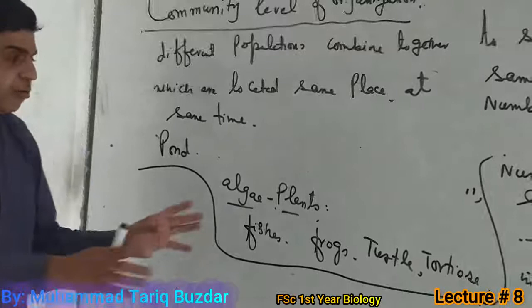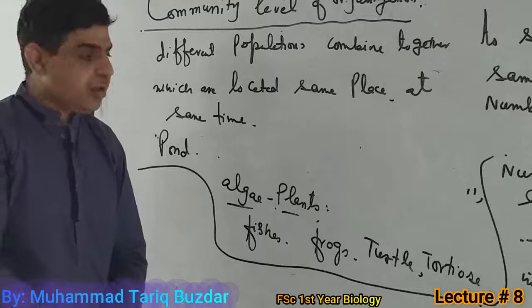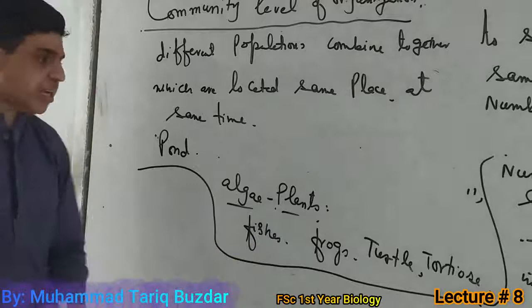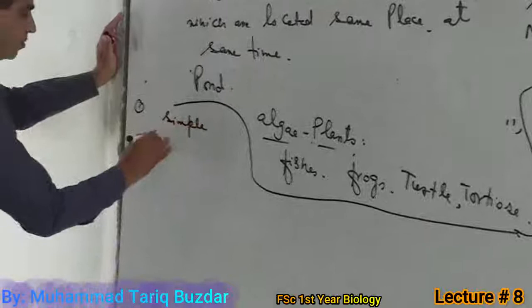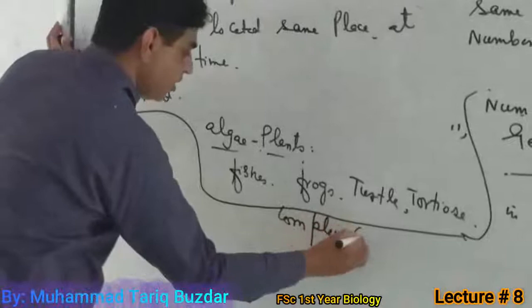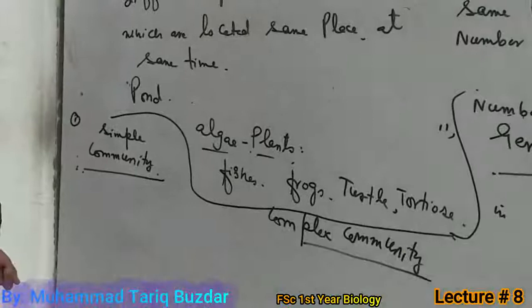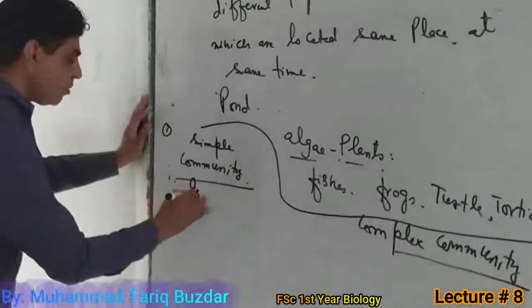They combine and are present in the same place and at the same time — what do we call this? A community. There are two types of community. The first type is called a simple community, and the other type is the complex community.